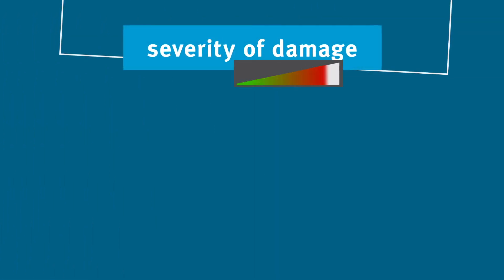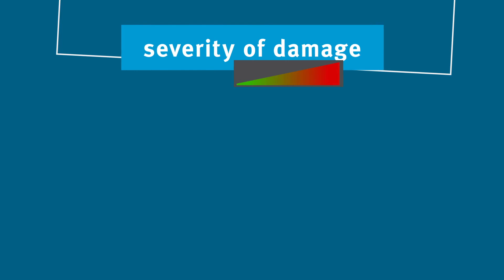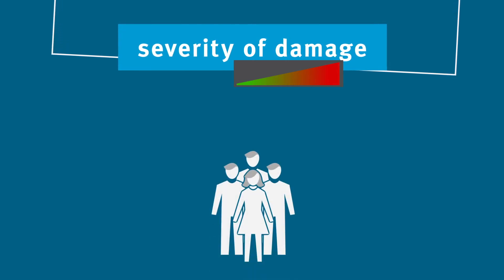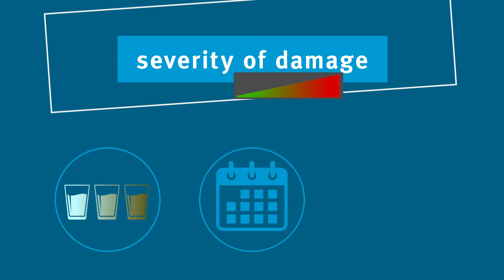The most important criterion for the severity of damage of a hazard is the expected impact on the health of consumers. The following factors should be considered: How much has the drinking water quality changed? How long did the drinking water not meet the necessary quality requirements? And how many people used the drinking water during this period?